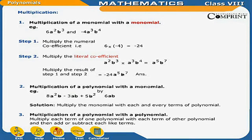Multiplication 1: Multiplication of a monomial with a monomial. Example: 6a²b³ and minus 4a³b⁴. Step 1: Multiply the numeral coefficients — 6 into minus 4 equals minus 24. Step 2: Multiply the literal coefficients — a²b³ into a³b⁴ equals a⁵b⁷. Combining steps 1 and 2 gives minus 24a⁵b⁷.